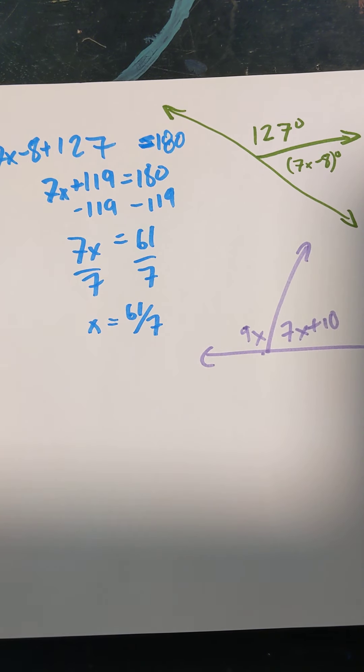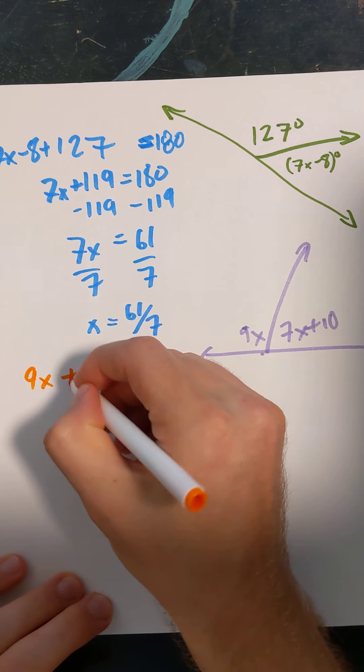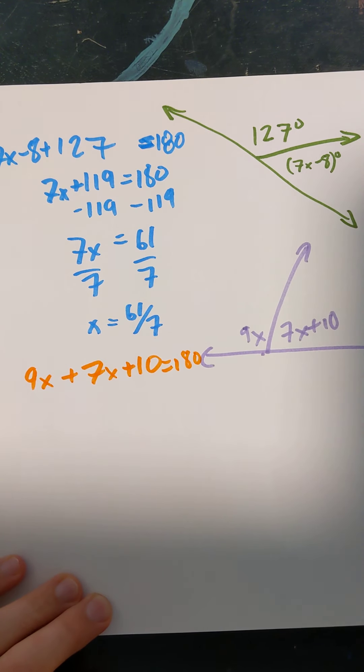How am I going to solve for X? Well, I know that this is a straight line, so I know if I add these two things up, 9X plus 7X plus 10 is going to equal 180.